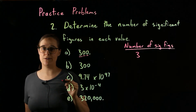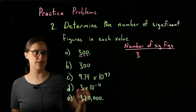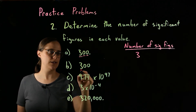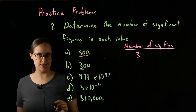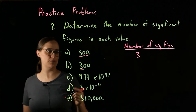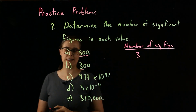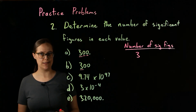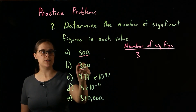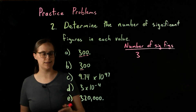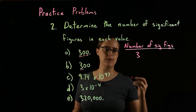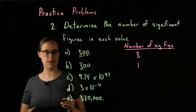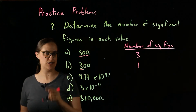Problem B: 300 with no decimal point written at the end, meaning it's an implied decimal point. The 3 is significant because it's a non-zero number, but the zeros are not significant because we are missing the decimal point at the end. So this only has one significant figure — only the 3 is significant.